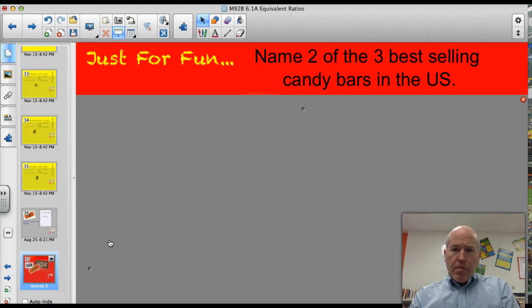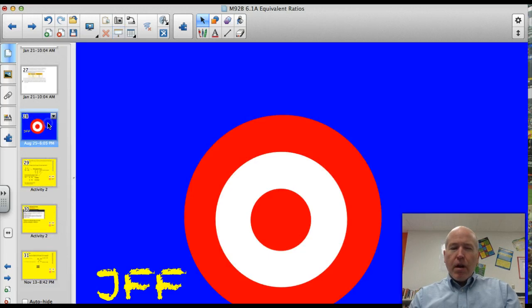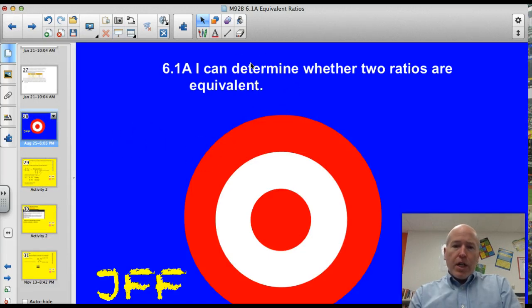Just for fun, name two of the three best-selling candy bars in the United States. I bet if you think hard enough you can come up with a couple of them. Alright, officially tonight's target is 6.1A. I can determine whether two ratios are equivalent. Let's do this thing.